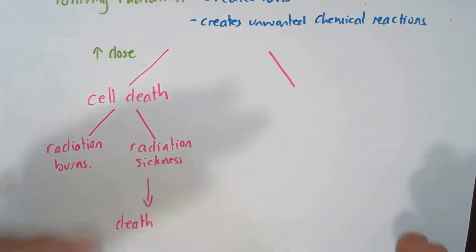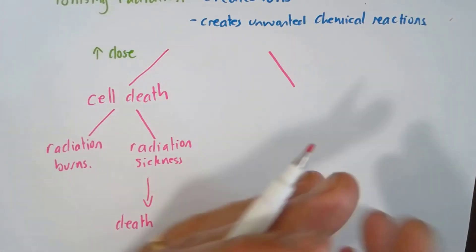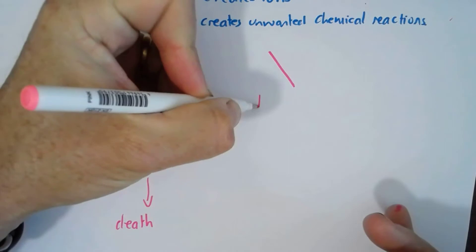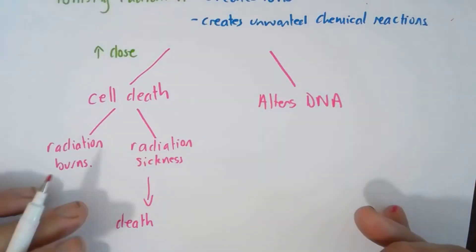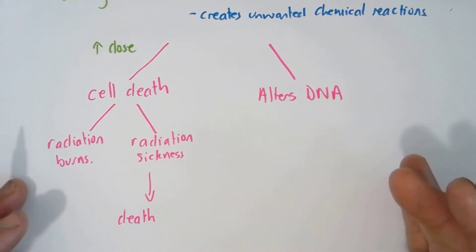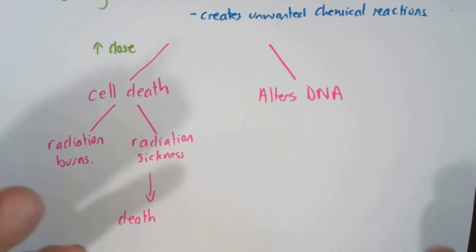Exposure to radiation can affect the DNA within the nucleus of cells. It actually alters the DNA. Now if that happens in body cells - say skin cells, cells of the lungs or different organs of the body.